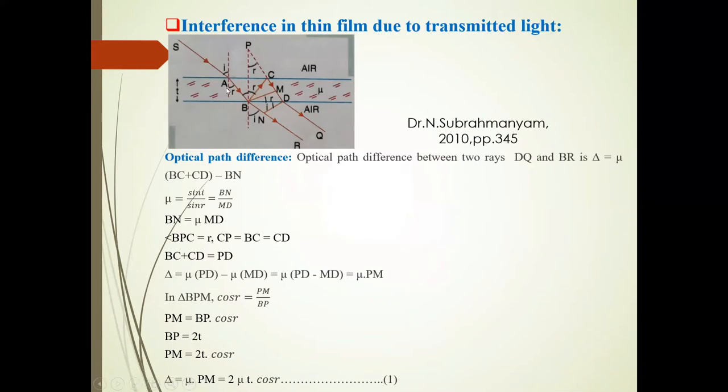At this point, the angle of incidence is i, and at point A it is reflected along AB. At point B, it goes along BR in air medium. At point B it is also reflected along BC. At point C, it is again reflected internally along CD. At point D, it emerges out as DQ. These two rays are transmitted rays, and they interfere with each other.